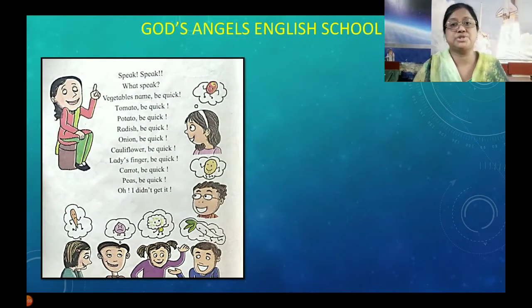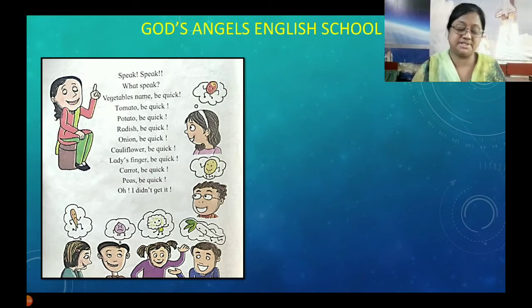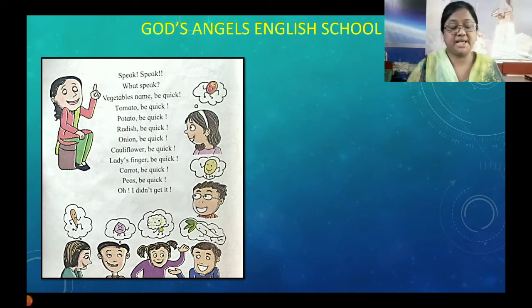There is no explanation in this. Vegetables ke naam diye hain. The poem will repeat two times. Aap uske saath repeat karo. Speak, speak.